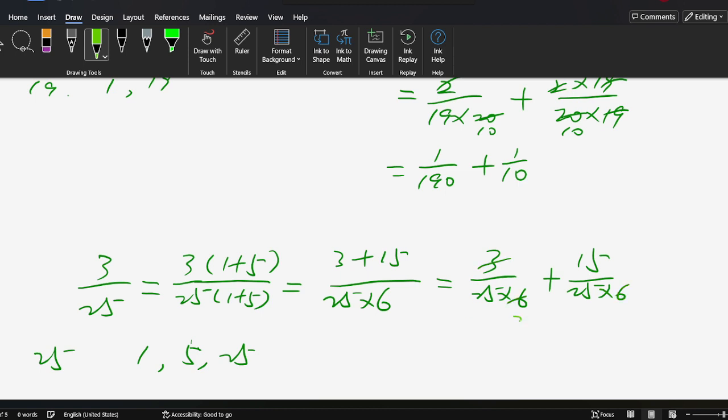Now we simplify by canceling: divide by 5 here and divide by 3. This gives us 1/50 + 1/10. That's the solution.